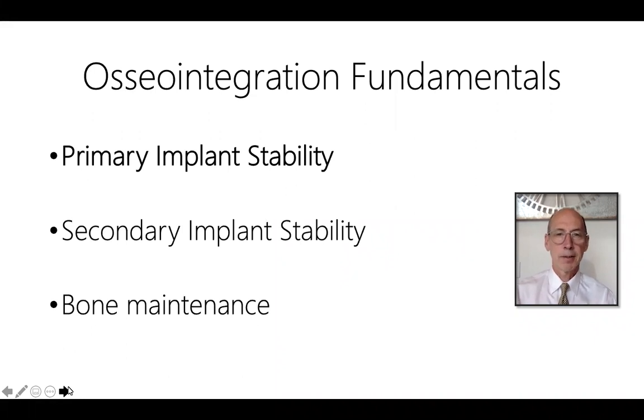Osteointegration requires three fundamentals. The first is primary stability. This assures that there's little micro motion between the implant placed in bone and the healing bone itself. Secondary implant stability is also required, and this refers to the rapid formation of bone following implant placement that will maintain the implant in a stable position.